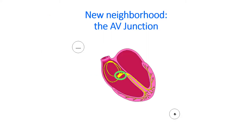The cells in the AV node serve two separate functions. The AV node slows down conduction and allows the ventricles enough time to fill. In the same area, there are specialized pacemaker cells which have the ability to spontaneously generate an impulse. Beats which arise from this area are called junctional beats, also called nodal or AV nodal beats. The AV junction serves as an escape or secondary pacemaker — a backup if the SA node fails.